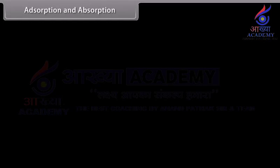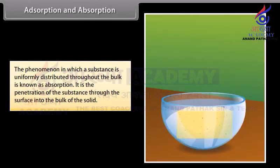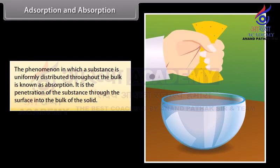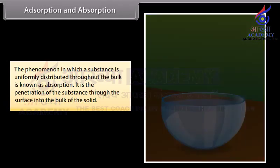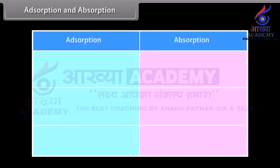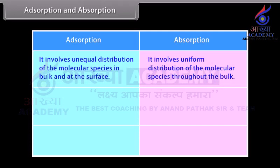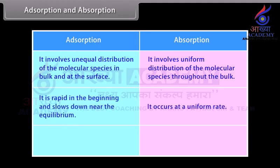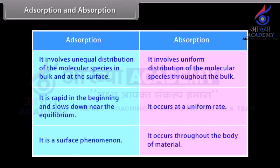Adsorption and absorption. The phenomenon in which a substance is uniformly distributed throughout the bulk is known as absorption. It is the penetration of the substance through the surface into the bulk of the solid. For example, when a sponge is dipped in a liquid, it absorbs some molecules of liquid. Adsorption involves unequal distribution of molecular species in the bulk and at the surface, whereas absorption involves uniform distribution throughout the bulk. Adsorption is rapid in the beginning and slows down near equilibrium, whereas absorption occurs at a uniform rate. Adsorption is a surface phenomenon, whereas absorption occurs throughout the body of the material.